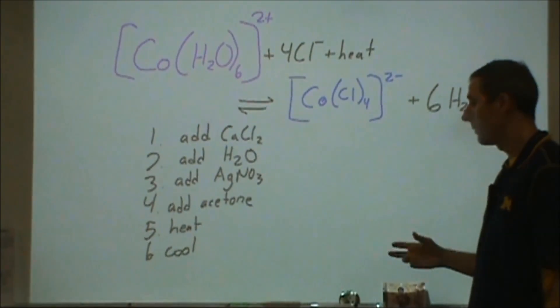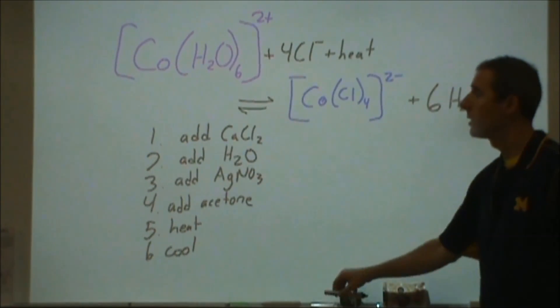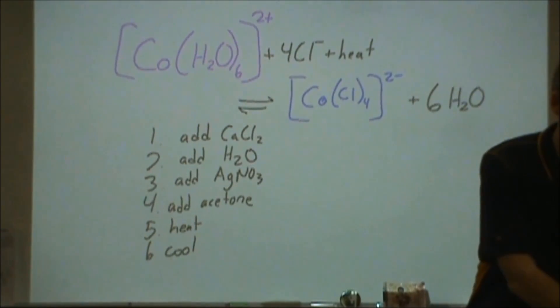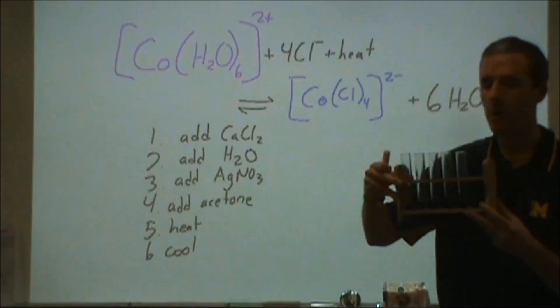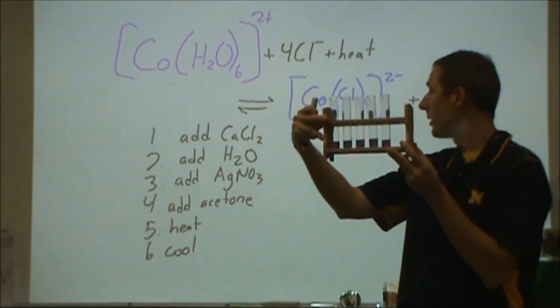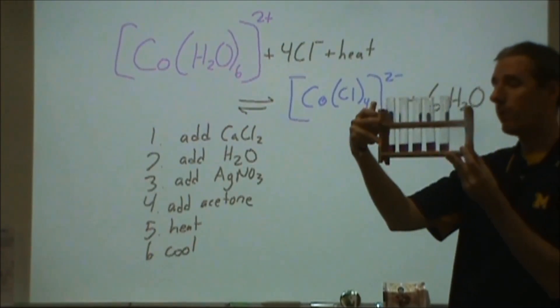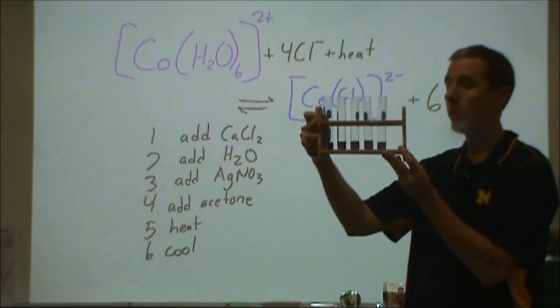Before I walk you through the experiment itself and show you some of the chemicals, what we're dealing with here is an equilibrium mixture where we have two different cobalt complexes. One where the cobalt is complexed by water and the other where it's complexed by chloride. Since there's different ligands, that's going to affect the light absorption.